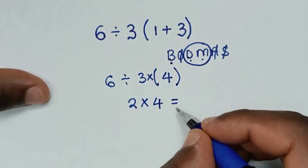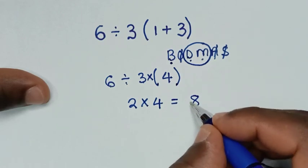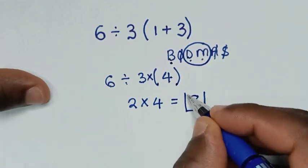Which is equal to 2 times 4 it is 8. Therefore this is our final answer.